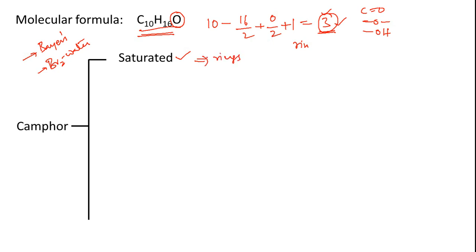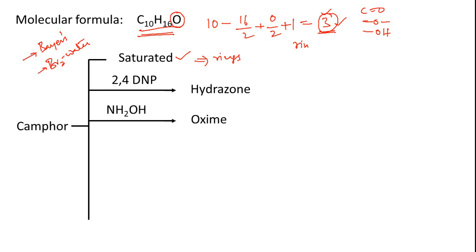Further, the compound was tested for all functional groups, and two reactions were found to be positive. First, 2,4-DNP reagent gave a crystalline hydrazone compound. Second, hydroxylamine hydrochloride reacted with camphor to give an oxime. These two characteristic reactions indicate the presence of a carbonyl carbon.